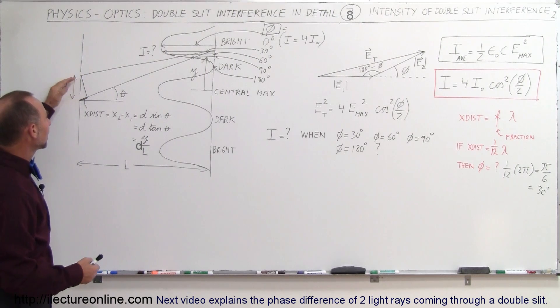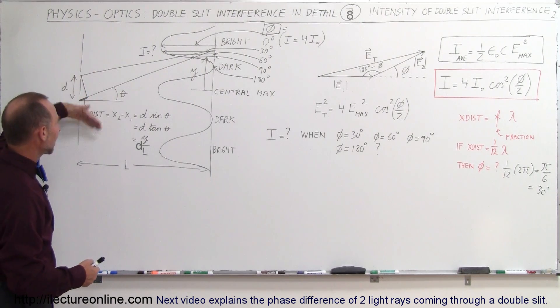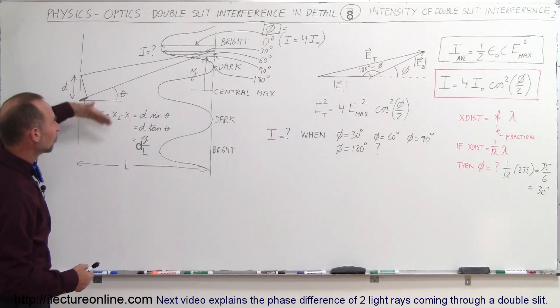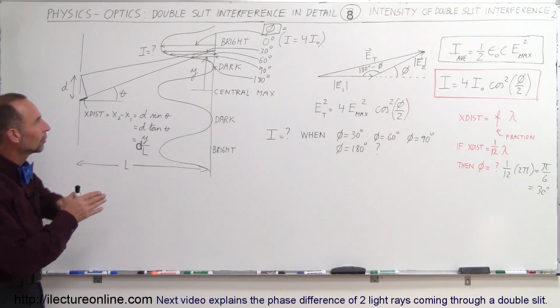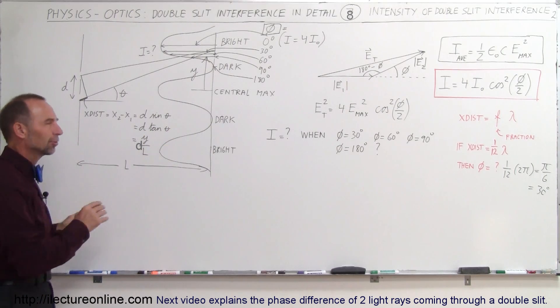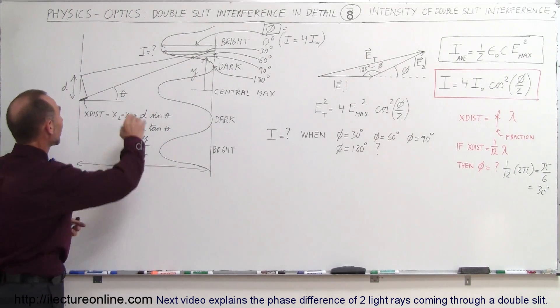When the two beams come together, they will diffract in all directions — they will bend in all directions.